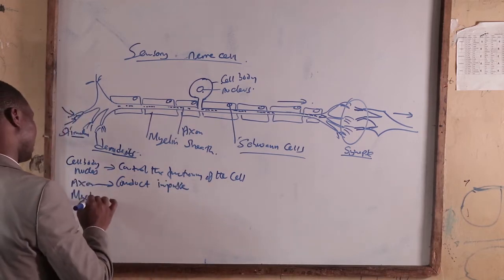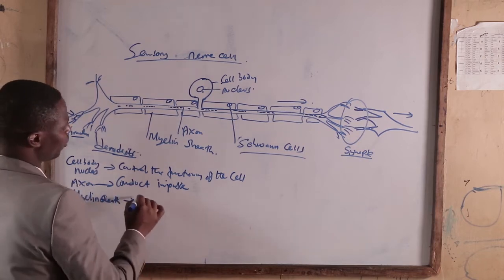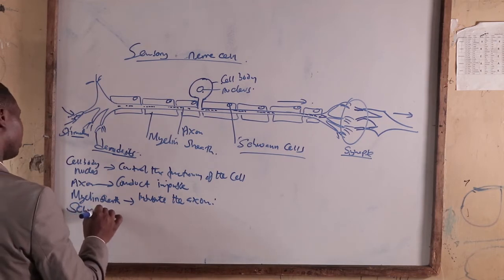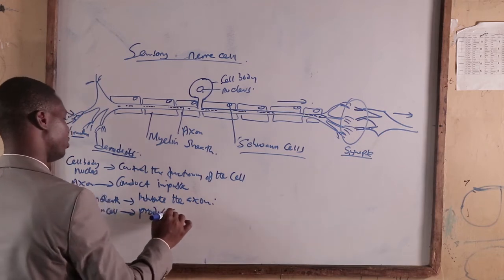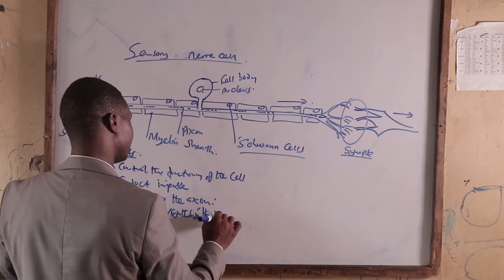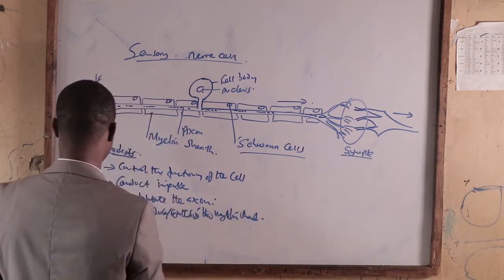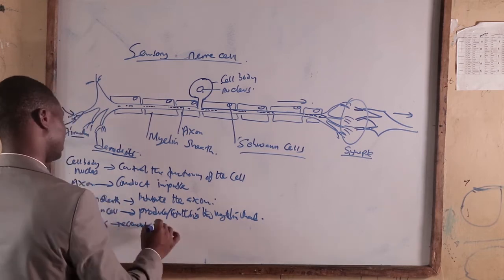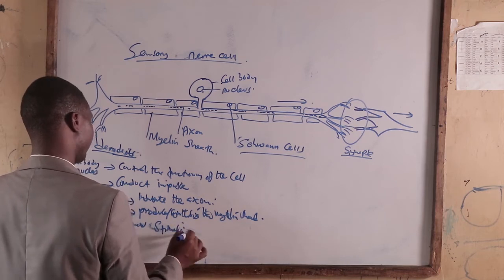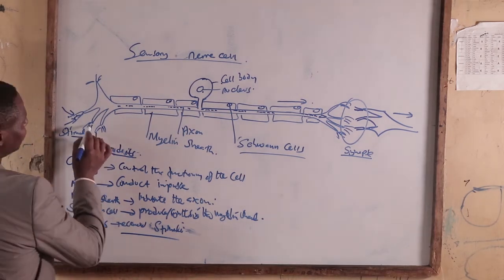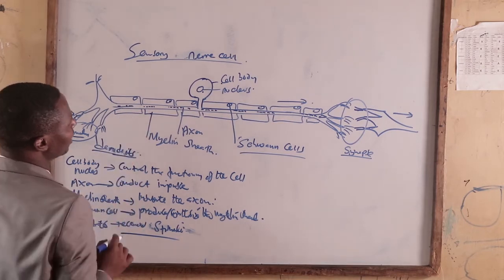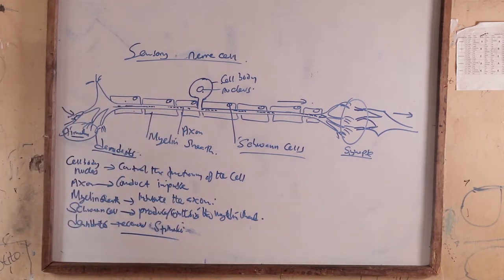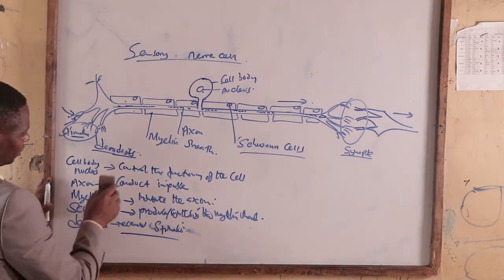The function of the myelin sheath: the Schwann cells produce or synthesize the myelin sheath. The dendrites receive stimuli and convert them into impulses. That impulse is then conducted through the axon. The myelin sheath serves to isolate the axon, and the Schwann cells produce the myelin sheath.